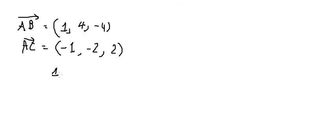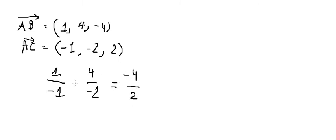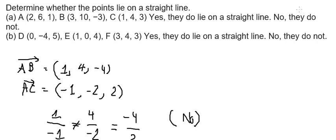So we have 1 divided by negative 1, 4 divided by negative 2, and negative 4 divided by 2. The first two ratios are the same, but the last one is not the same. So that means no, they are not on the straight line.